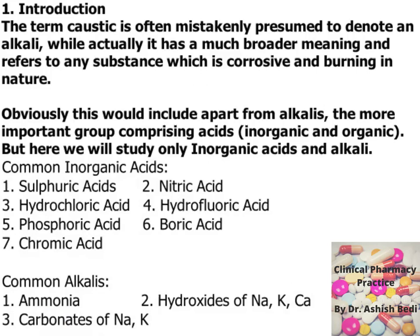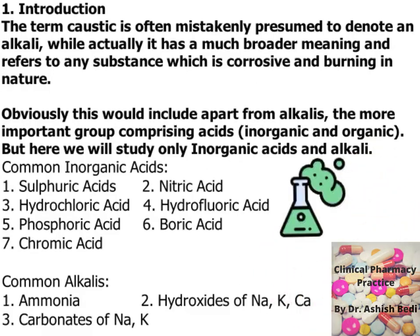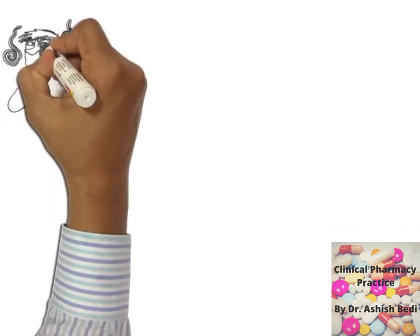Among the common acids seen in caustic poisonings, sulfuric acid and hydrochloric acid are the most frequent. The common alkalis encountered are sodium and potassium hydroxides. This completes the introduction of caustic poisoning, covering the common acids and alkalis involved.